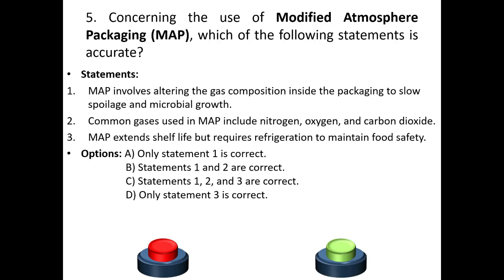Fifth question: concerning the use of modified atmospheric packaging, each of the following statements is correct or accurate. Statement one: MAP involves altering the gas composition inside the packaging to slow spoilage and microbial growth. Statement two: Common gases used in MAP include nitrogen, oxygen and carbon dioxide. Statement three: MAP extends shelf life but requires refrigeration to maintain food safety.